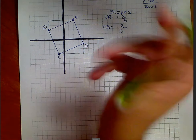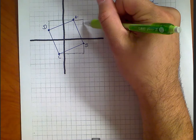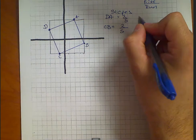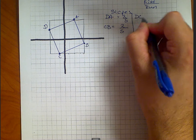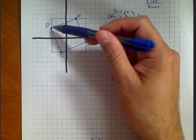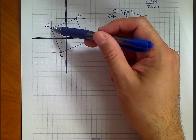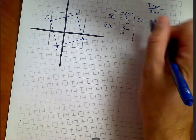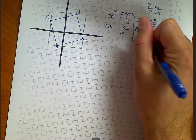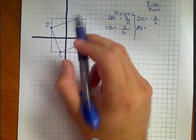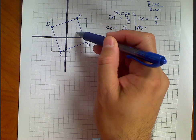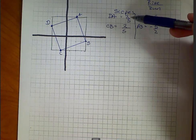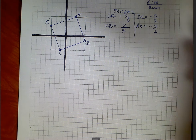Next checking the opposite sides. For DC: the rise is negative (going down) — down 5 and over 1, so slope is -5 over 1. For AB: also going down 5 and over 2, slope is -5 over 2. And for CB: rise 2 over run 5, matching DA.